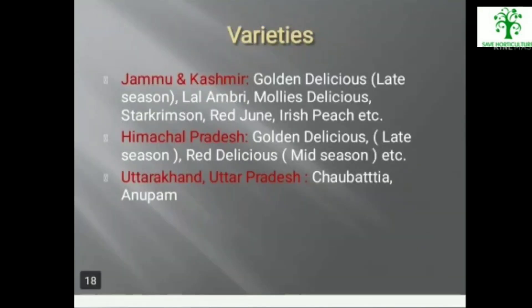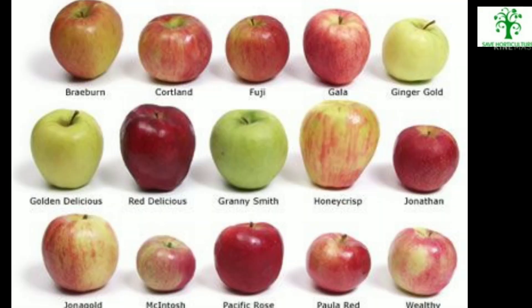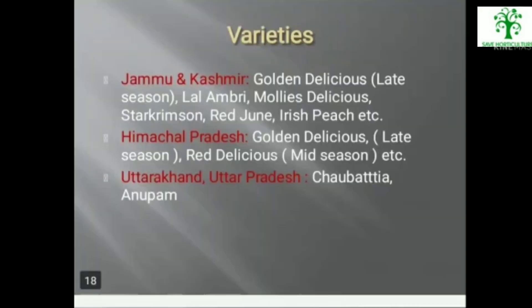Different cultivars of apple exist by region. In Jammu and Kashmir: Golden Delicious (late season), Lal Ambri, Mollis Deliciar, Star Crimson, Red June, Irish Peach, etc. In Himachal Pradesh: Golden Delicious (late season), Red Delicious (mid season), etc. In Uttarakhand and Uttar Pradesh: Chobatia and Anupam are sown.